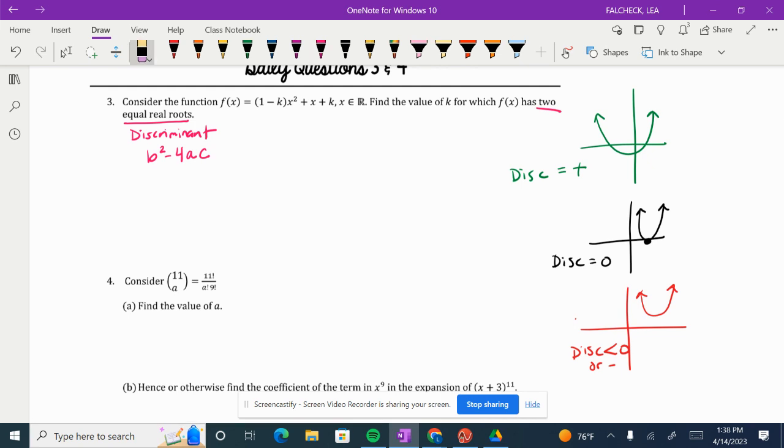Okay, so in this problem it says find the value of K for which it has two equal real roots. Two equal real roots is a very creepy way of saying that it has how many roots? One repeated root, right? One repeated root. Creepy.